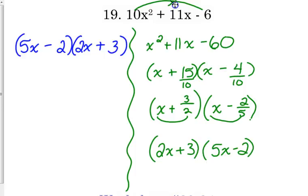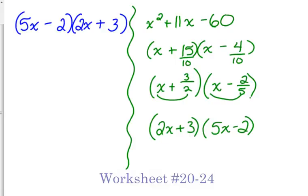So when the numbers are small, it's not too bad. But then sometimes those numbers get a little bit bigger and we've got to do a little bit more work. So let's work on factoring with a composite leading coefficient, 20 through 24.